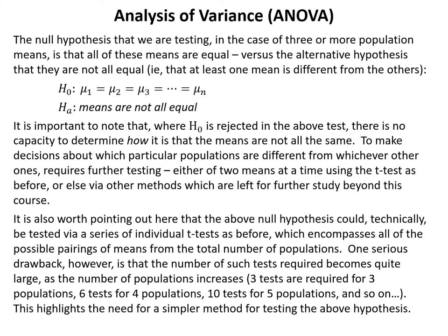When the number of populations to consider is three or more, another type of test is required. The null hypothesis is that all means are equal — mu 1 equals mu 2 equals mu 3, up through mu n — versus the alternative that the means are not all equal. It's important to note that when H₀ is rejected, there is no capacity to determine specifically how the means differ; further testing using t-tests or other methods would be required.